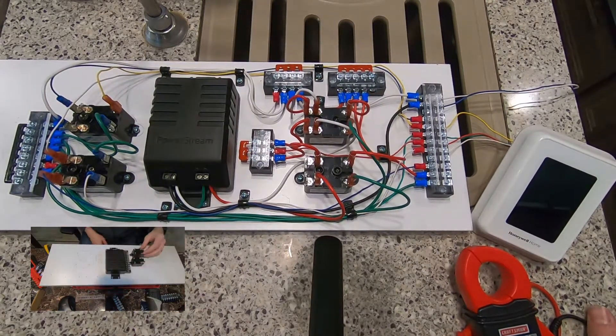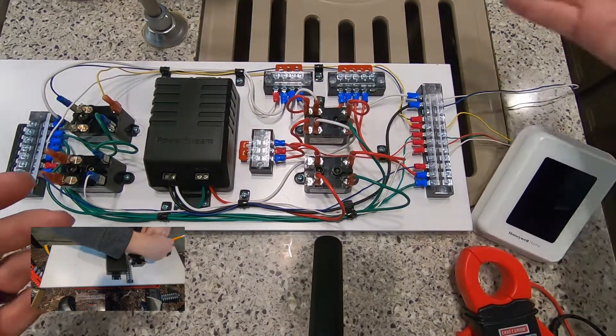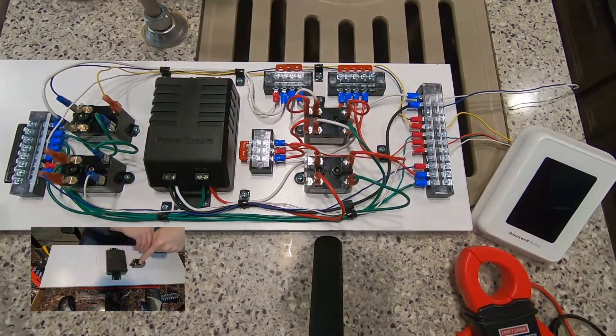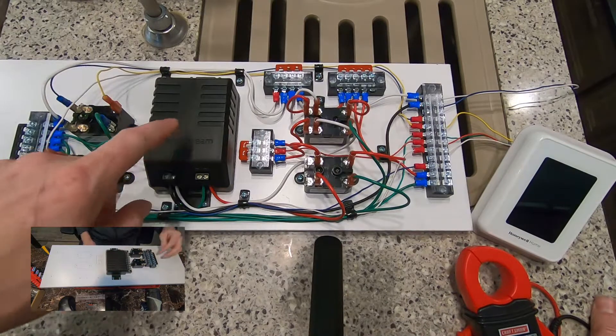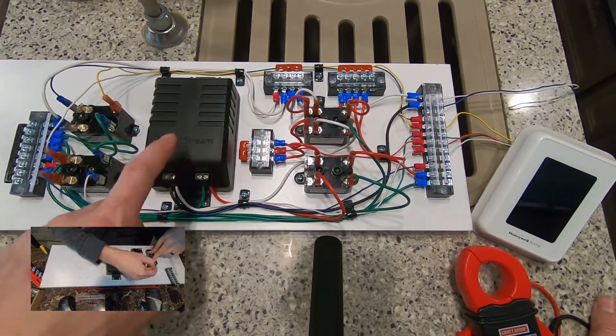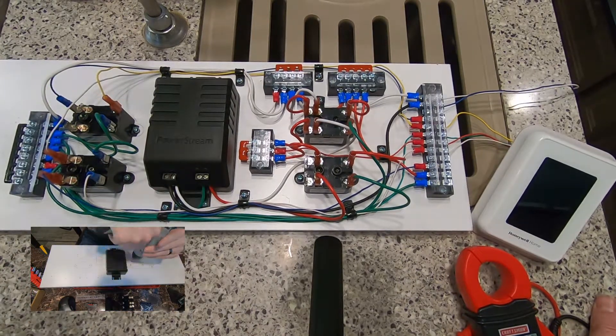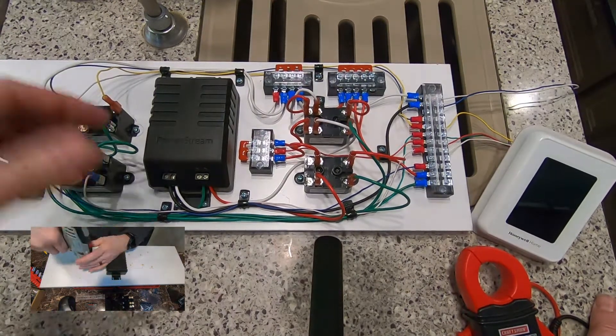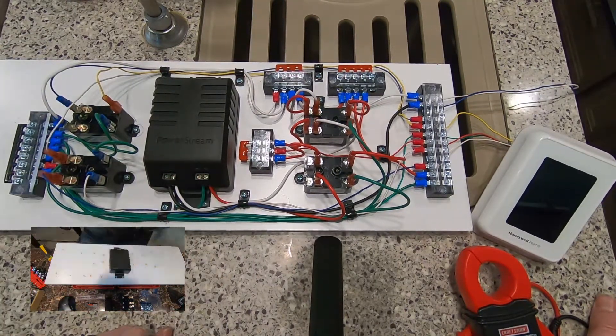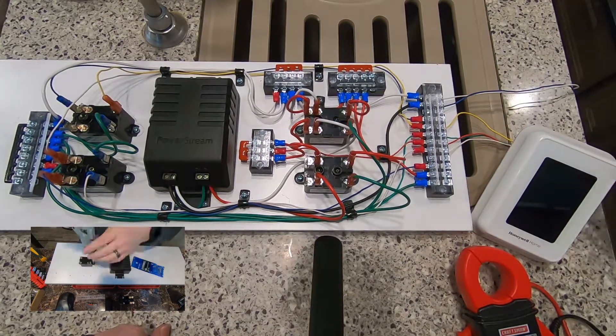Regardless of whether we're plugged into shore power or not, the way this is set up I've got a set of inputs over here and then a bunch of components. What I have here, this black box is actually a 12 volt DC to 24 volt AC converter, technically that's an inverter, but it takes 12 volts in and gives me my 24 volts out.